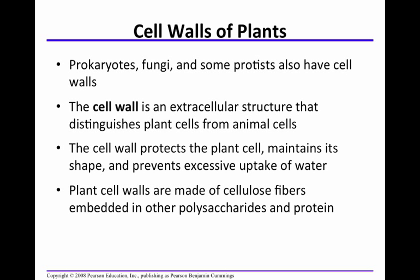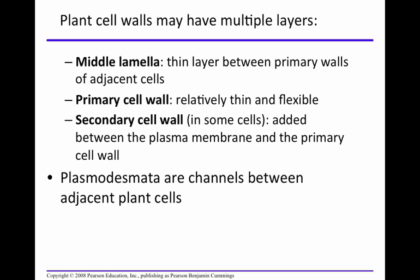Plant cell walls are made of cellulose. They have multiple layers: a middle lamella, and a primary and secondary cell wall. They also have plasmodesmata.